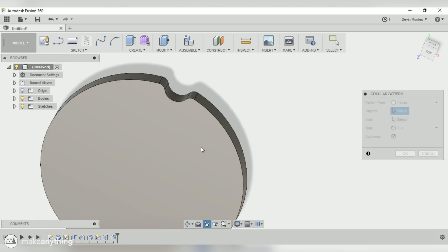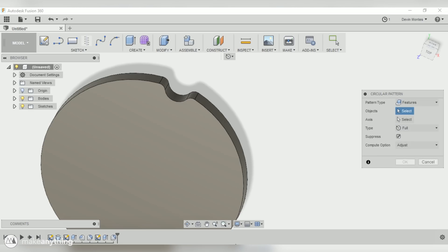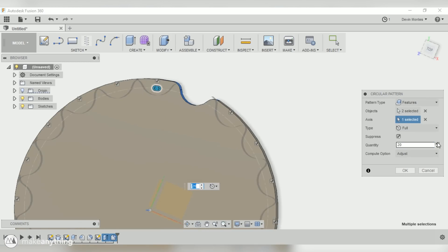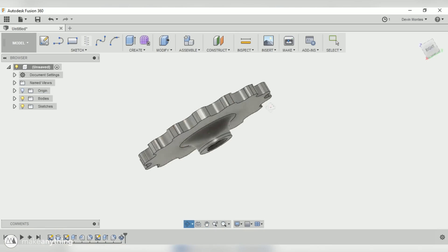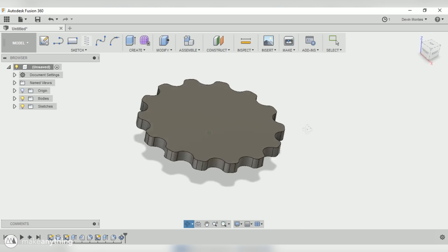And I'm going to go to Create and use the circular pattern tool to pattern those last two features that I just did around the center axis. Now I'll increase the quantity here until the spacing between the parts looks good. And there, that looks pretty nice. So let's hit okay, and there we go. We've got this kind of gear slash knurled edge that'll make it a lot easier to grip onto this wheel.